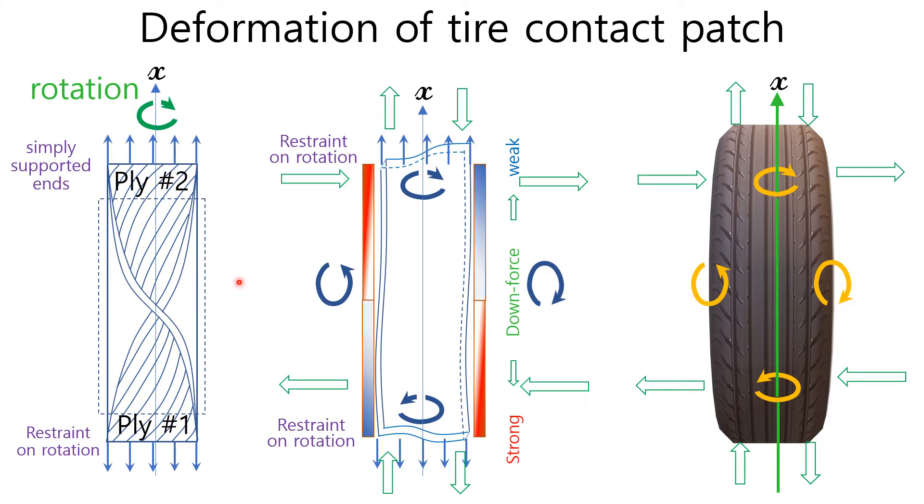For the Plysteer tire having this shape, belts have already been twisted. Belts are forced to be flattened and all the moments and forces are produced in the tire contact patch, like in the middle picture. Upper left and lower right region have the strongest downforce, and upper right and lower left region have the weakest downforce. Because of twisting behavior above mentioned, longitudinal and lateral forces are also produced in the tire contact patch.